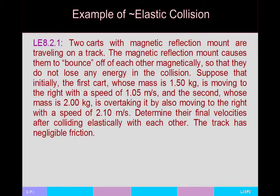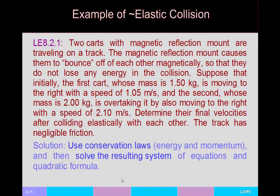One example of an elastic collision: PASCO and other scientific education companies make carts that roll on nearly frictionless tracks with magnetic bumpers, so there's no sound in the collision and virtually no energy is lost. You can set up photo gates, measure the speed of each cart before and after the collision, measure the masses, and verify whether energy is conserved. One cart's final speed would be 2.25 meters per second and the other 1.20 meters per second.